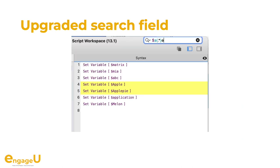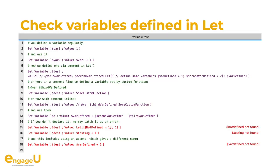Our search field can optionally take regular expressions, so you can find things in your scripts with a regular expression — for example, searching for everything starting with a $ followed by an A and ending with an E. We also got our variable checker improved, so you can now define a variable with a Let statement and inform the plugin about this with a little comment in front of your Let statement.